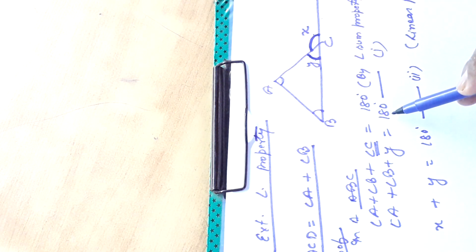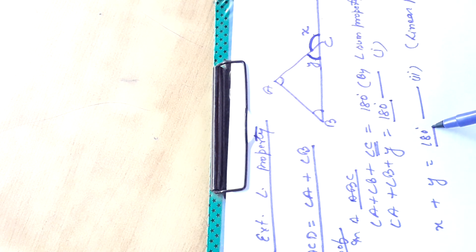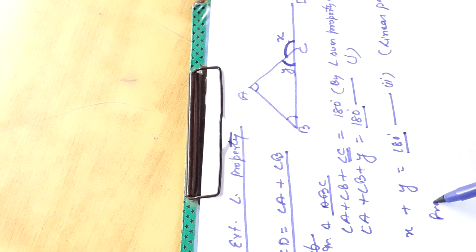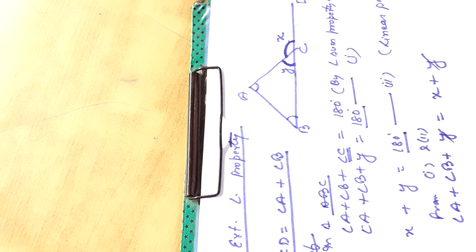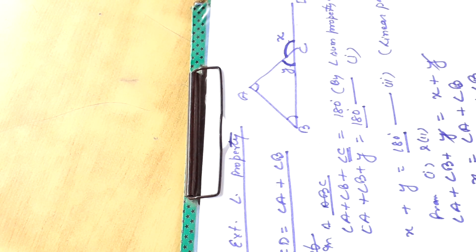Now in equation 1 we have RHS 180 degrees, and in equation 2 we also have RHS 180 degrees. Since the right-hand sides are equal, the left-hand sides will also be equal. So from equations 1 and 2, we can write angle A plus angle B plus y is equal to x plus y. Cancelling y from both sides, x is equal to angle A plus angle B. Therefore angle ACD is equal to angle A plus angle B. This is called the exterior angle property of a triangle.